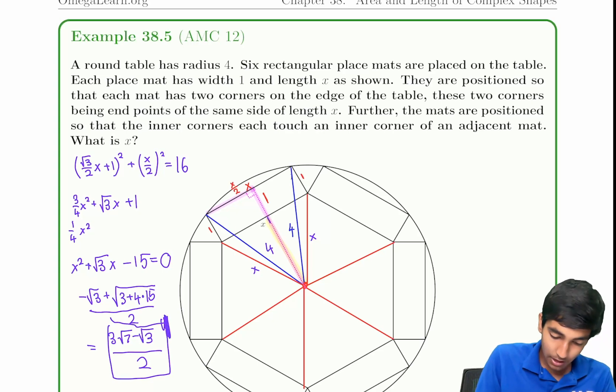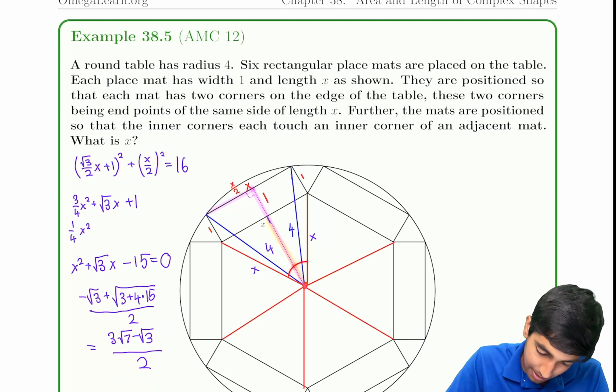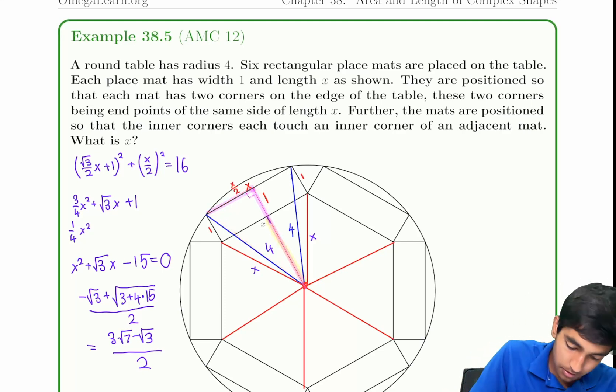This was not that tricky of a problem. The main idea was realizing this is 60 degrees by symmetry. And then this is x and x. And then we just use Pythag theorem: x root 3 over 2, 1, x over 2, and 4. We got our answer of 3 root 7 minus root 3 by 2.